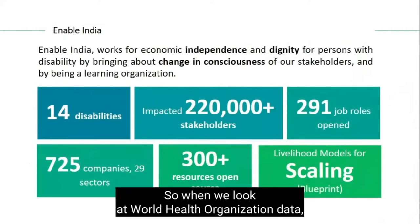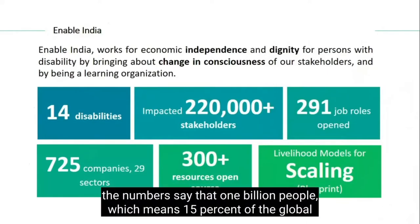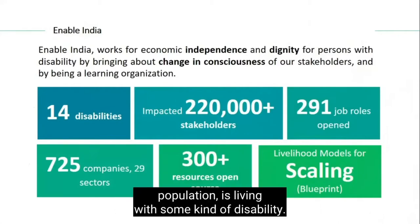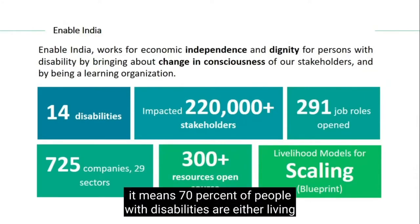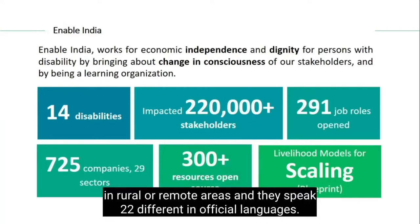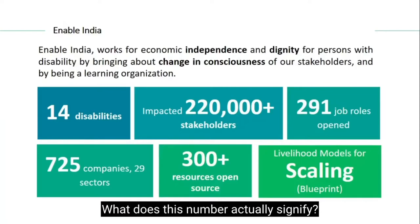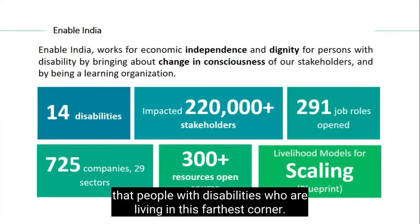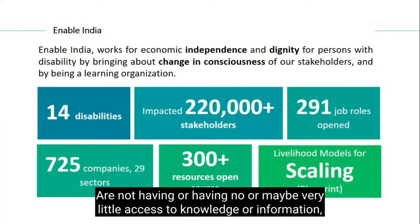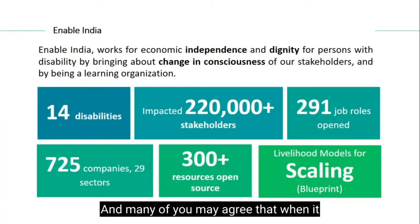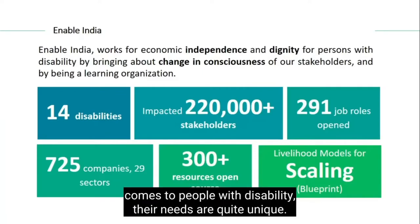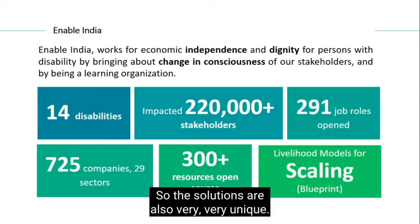When we look at World Health Organization data, the number says that 1 billion people, which means 15% of the global population, is living with some kind of disability. In the Indian scenario, 70% of people with disabilities are either living in rural or remote areas, and they speak 22 different official languages. This means that people with disability living in the farthest corners have no or very little access to knowledge, information, livelihood, or skilling opportunities. Their needs are quite unique, so the solutions are also very unique.